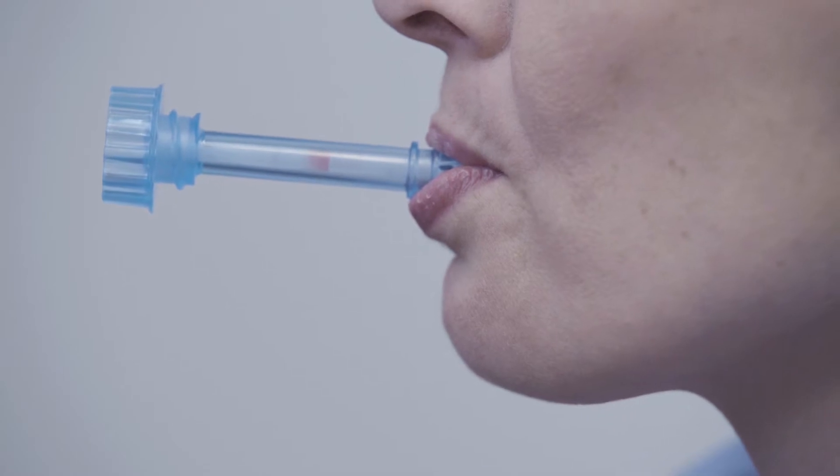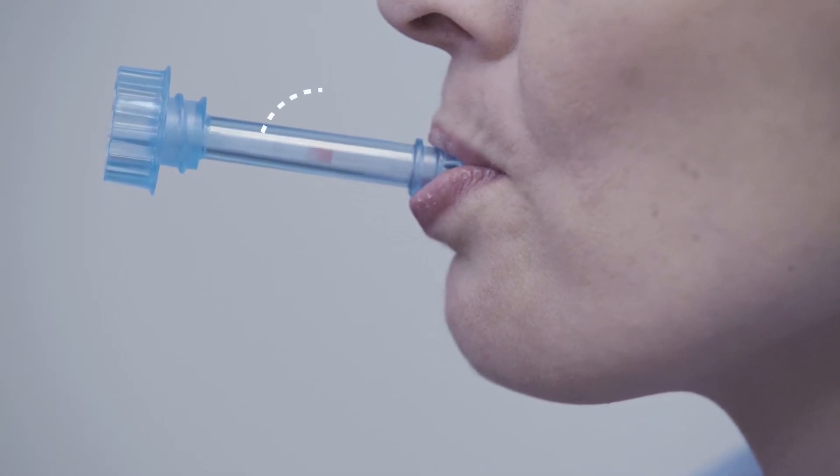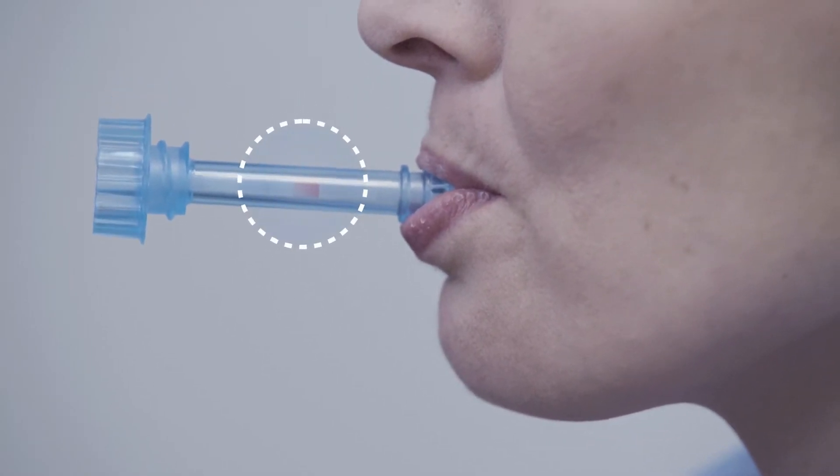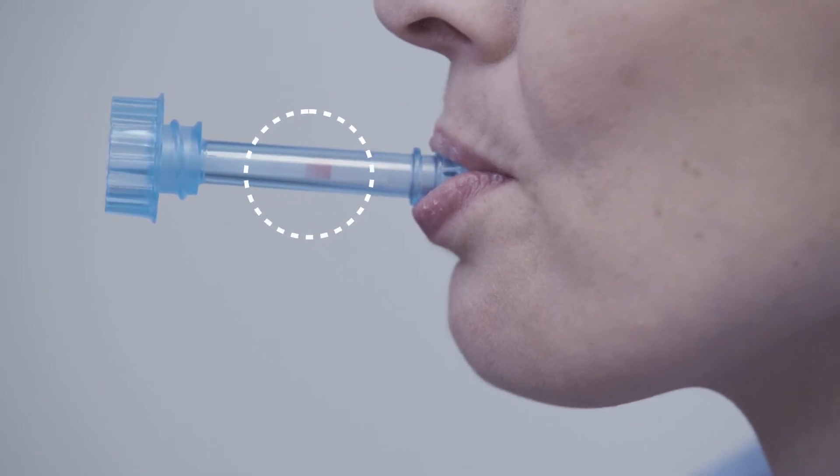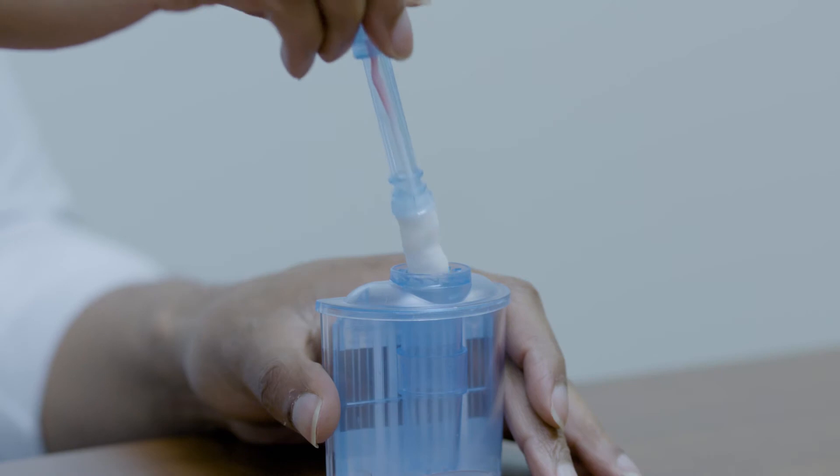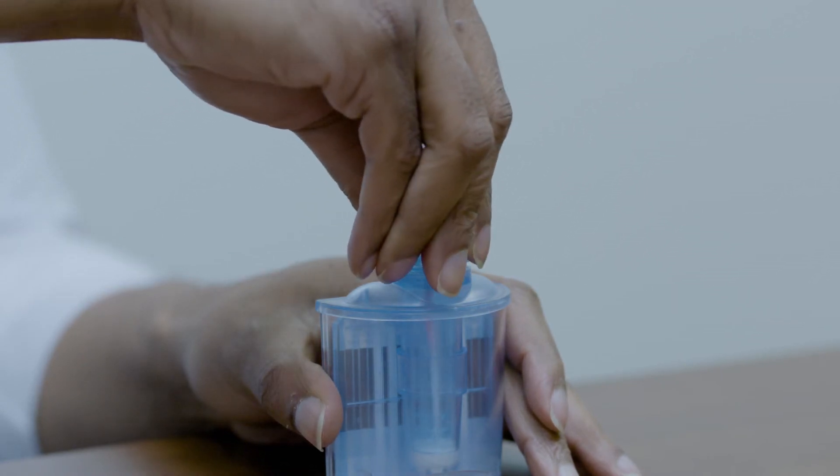This video shows color appearing on the indication strip inside the collection swab, which indicates there is a sufficient amount of oral fluid. Before testing, insert the collection swab, sponge first, into the device.